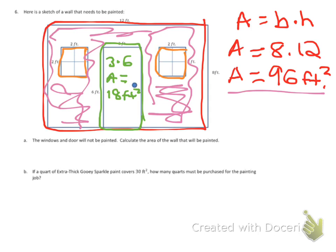And then we have the windows that are 2 by 2, so they would just be 4 feet squared. But you have 2 windows, so you've got to do that twice, 4 feet squared.